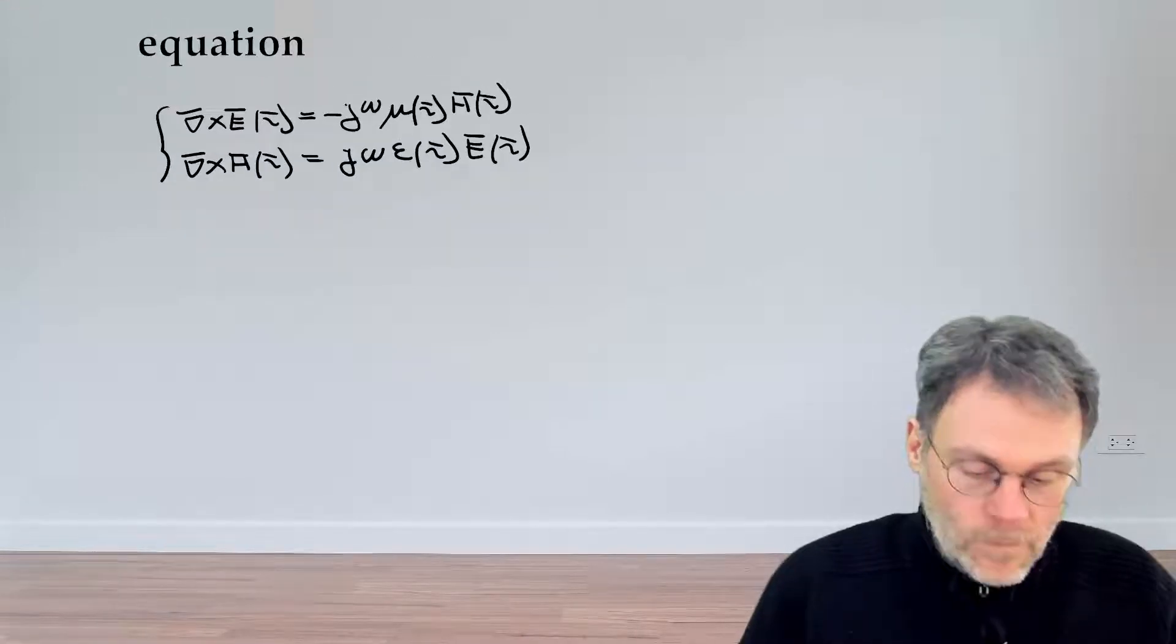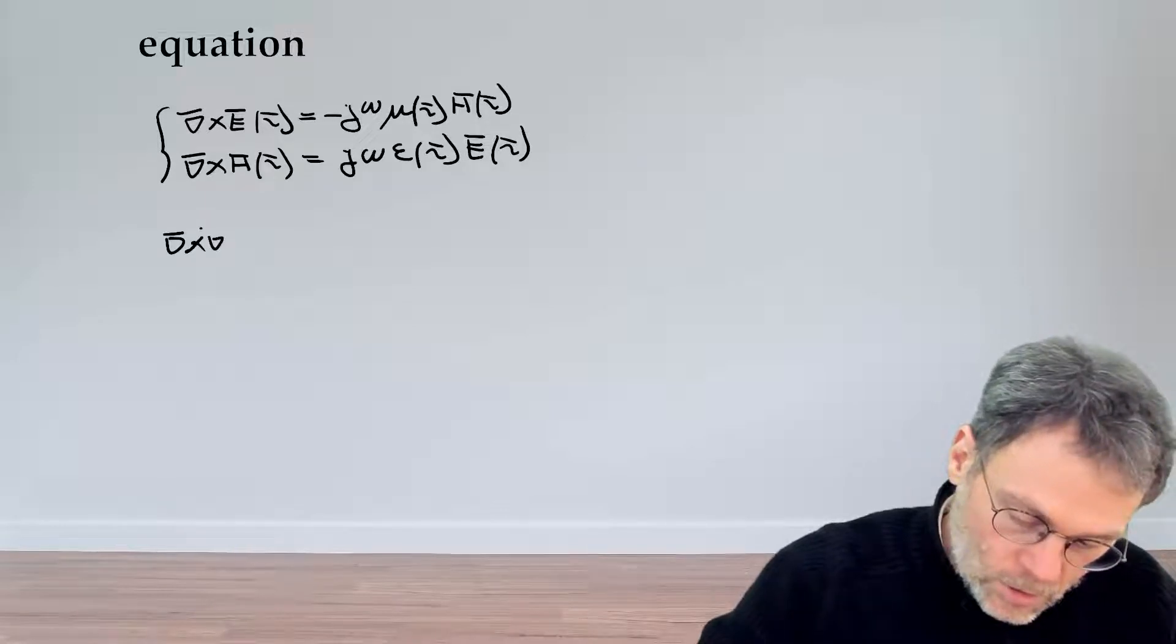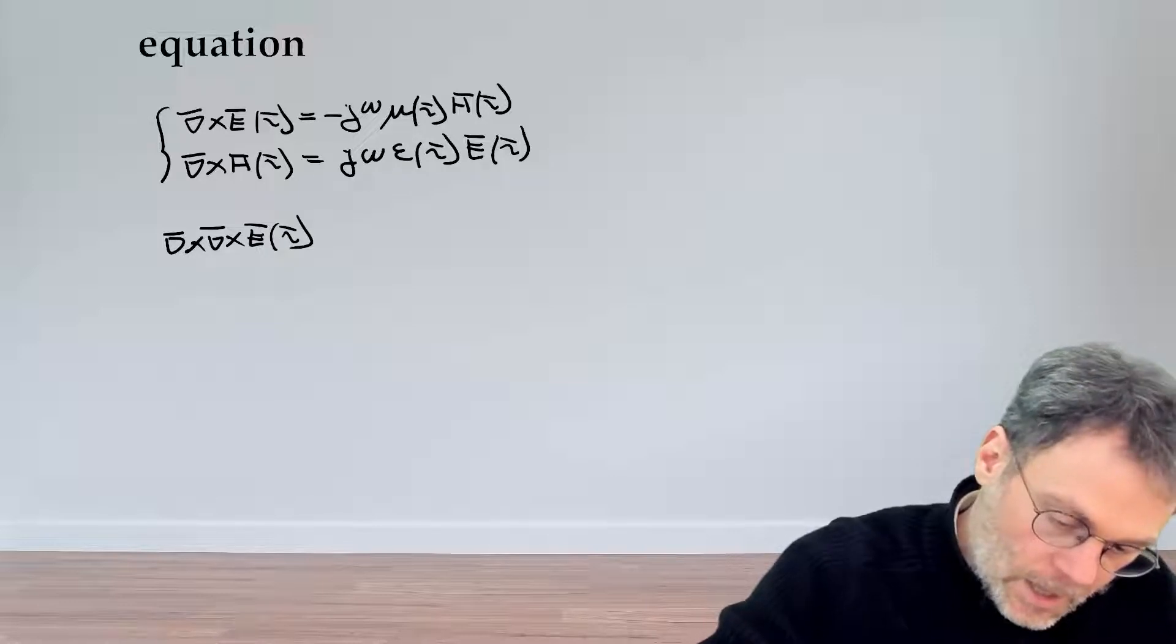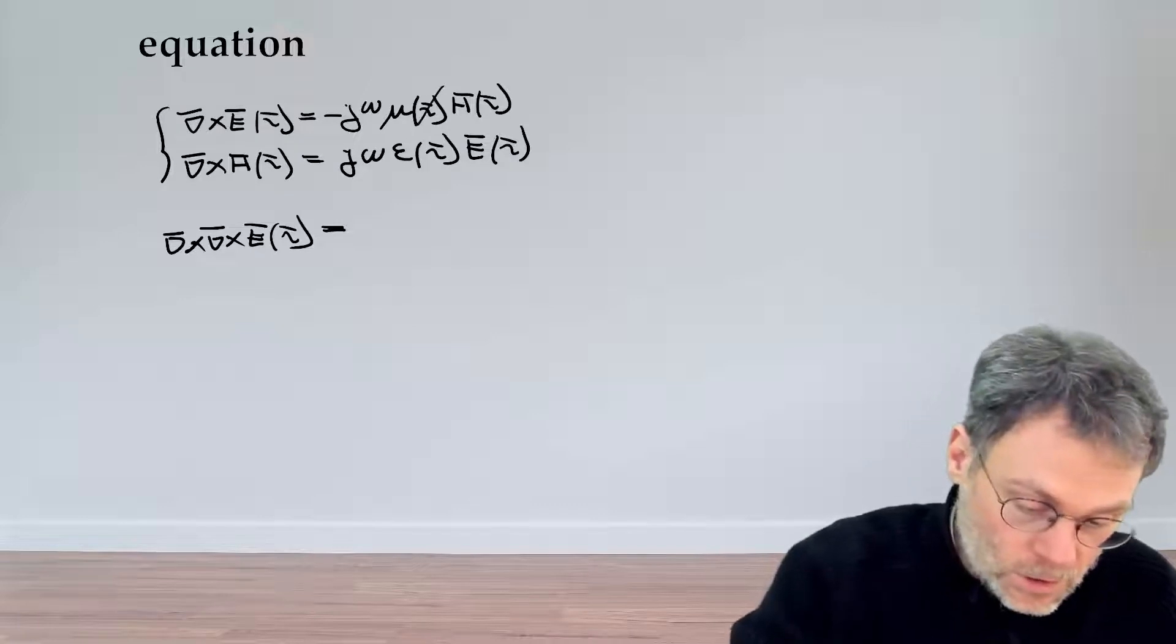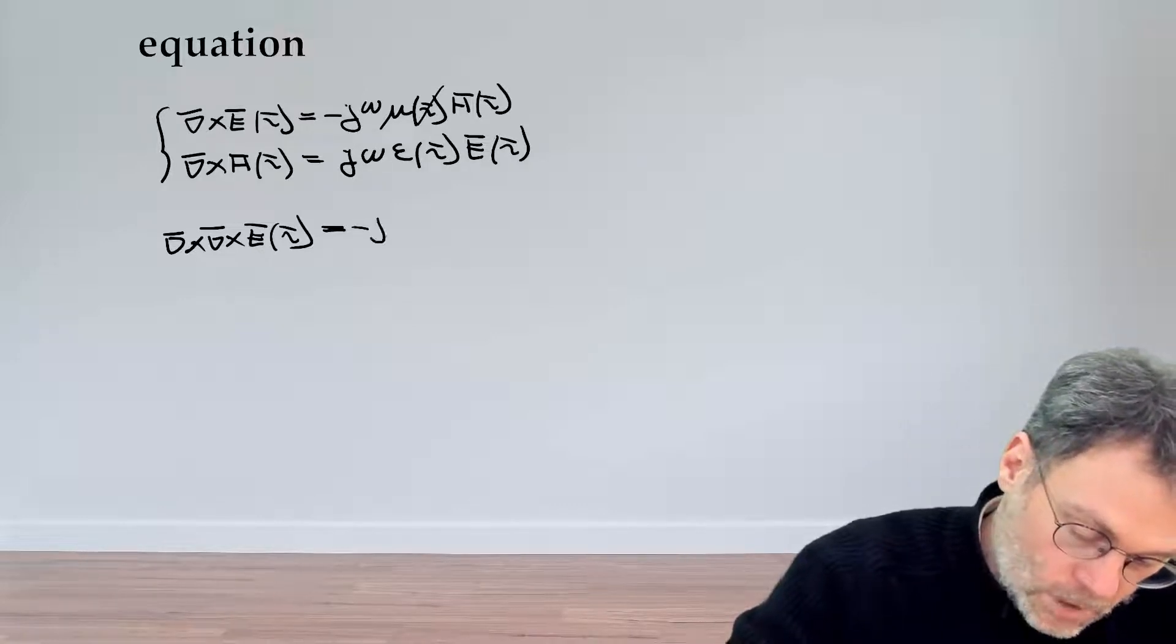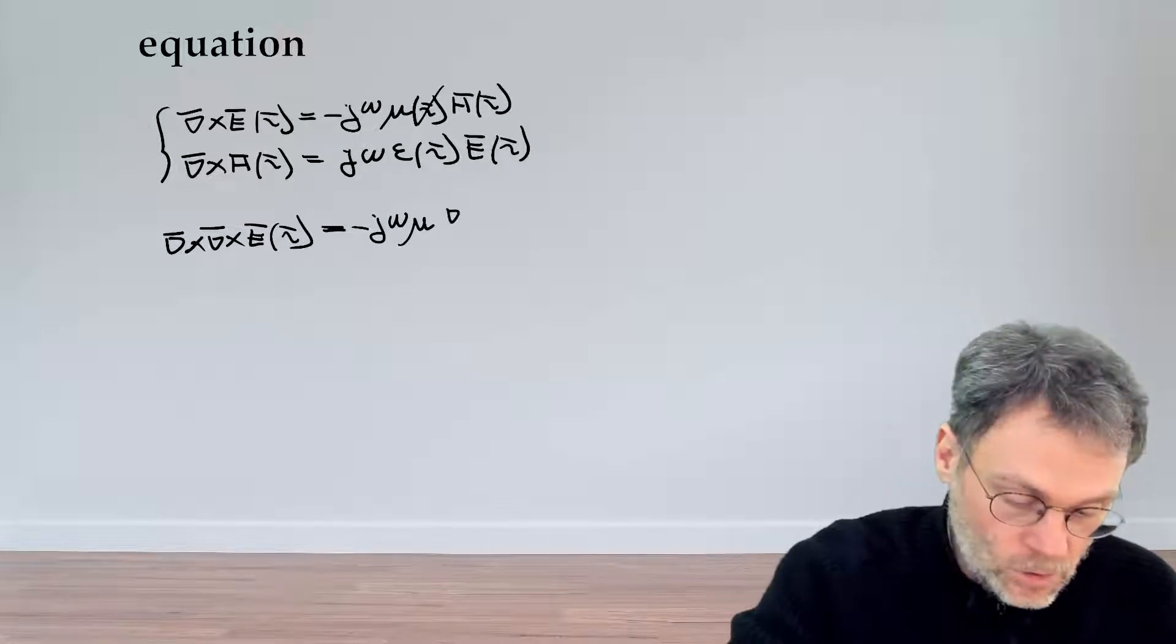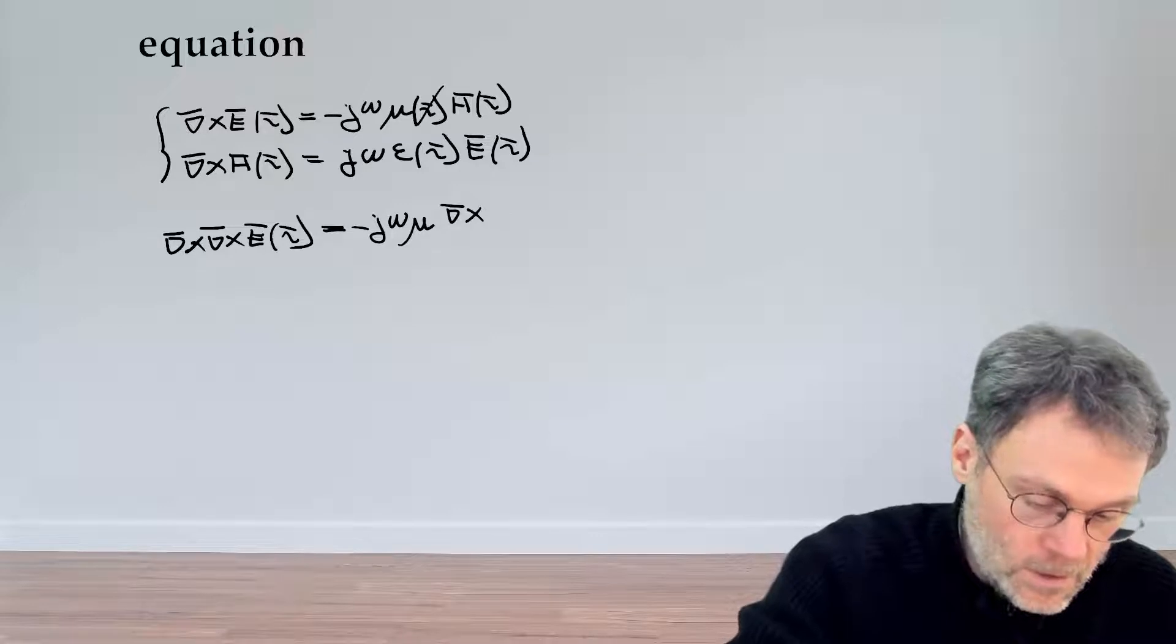So let's take the curl of the first equation. That's going to give us the curl of the curl of the electric field. And then we have the curl of the right hand side. And since we said that mu is a constant, we can just write minus j omega mu, bringing out the mu from under the curl. And then on the right hand side, we have the curl of the magnetic field.